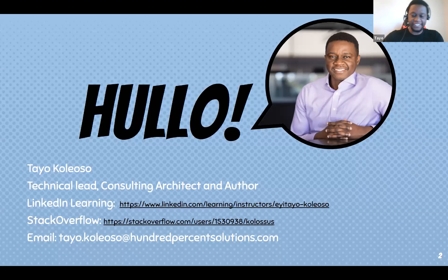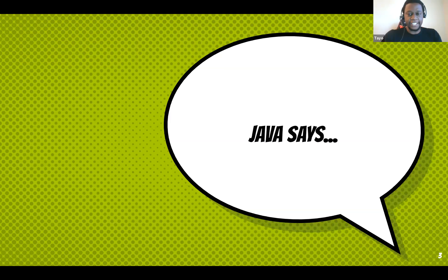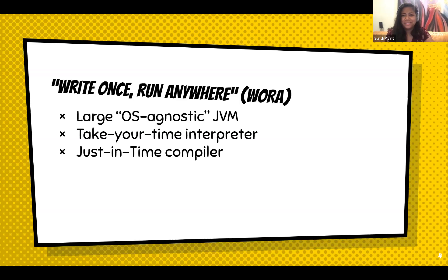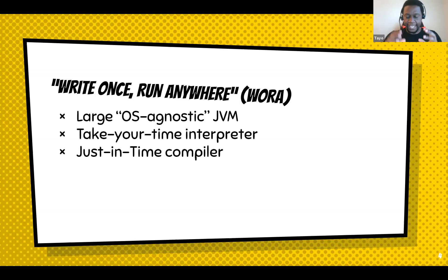Java used to say 'write once, run anywhere' — WORA. Are we all familiar with this? Are we all Java engineers here? Java is an object-oriented programming language that runs on three billion devices. Their bread and butter was that you could write a Java application on one computer and it would run everywhere.